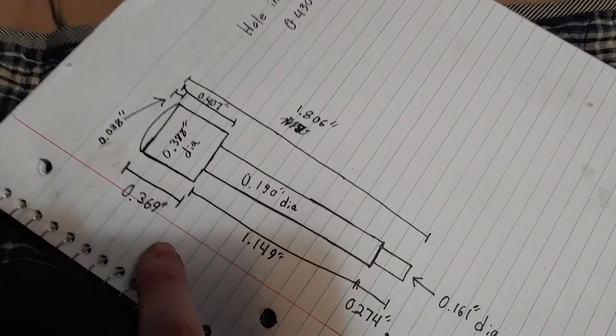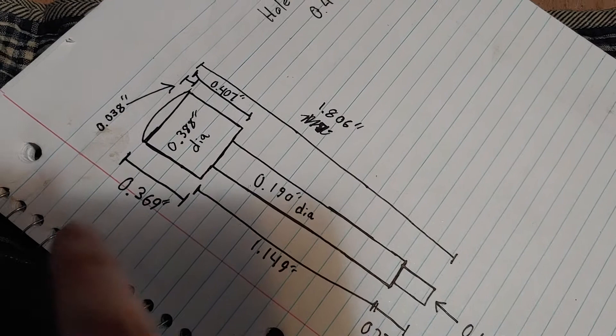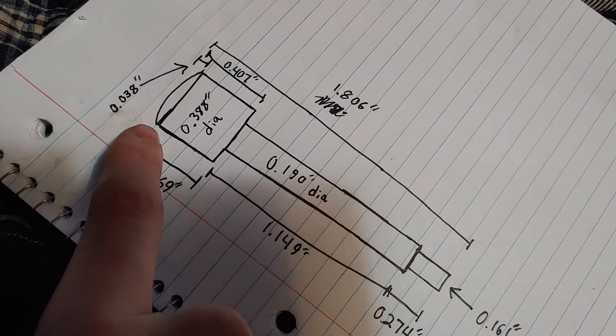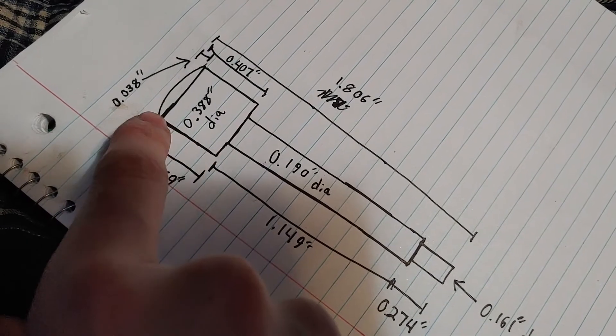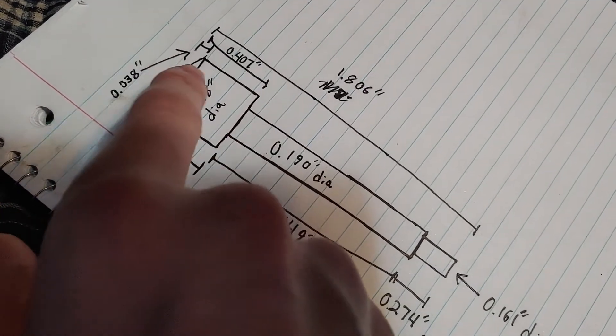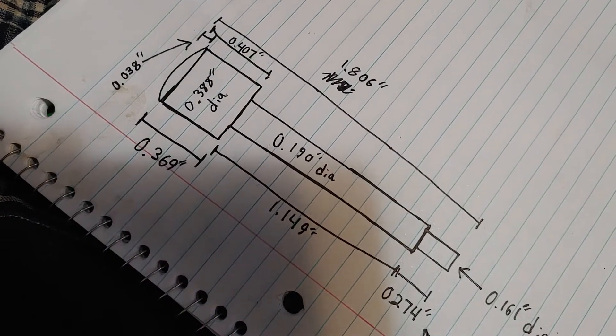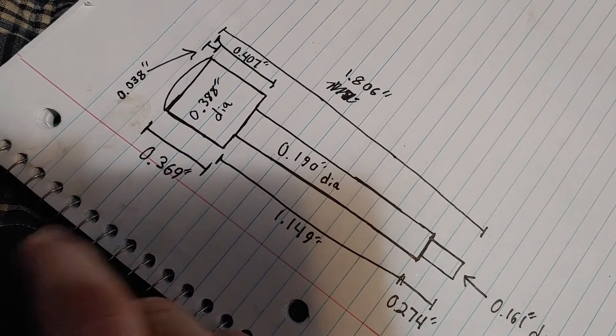But I'm going to be going over these measurements in case you can't read this for some reason. So from this flat surface right here when it stops, it bevels. That height between that line and that line are 0.038 inches.